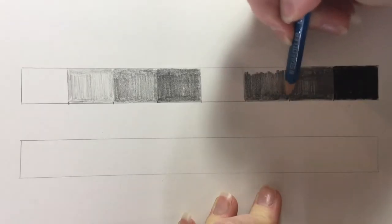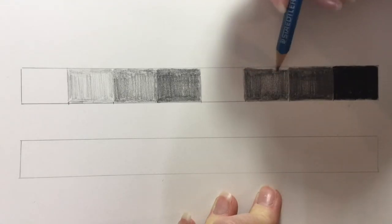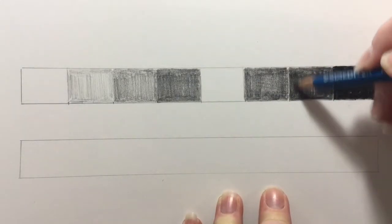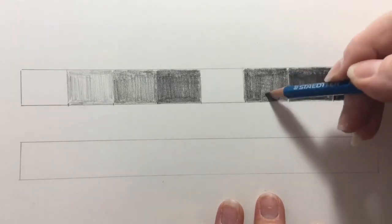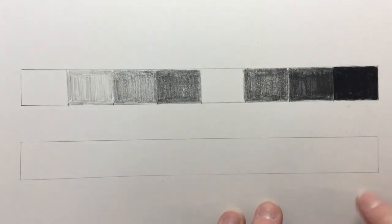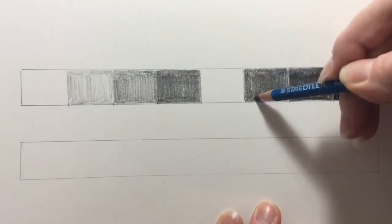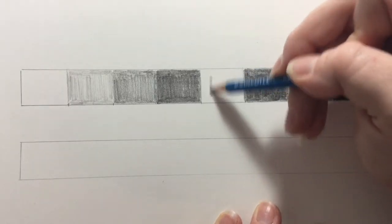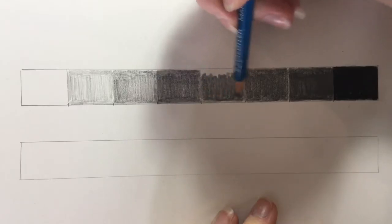So as I start to do my next box and I've left the middle one blank, I'm starting to see that I'm going to need to alter my values a little bit. As I look at the value boxes on either side of the one that I haven't colored in yet, I notice that they're a little too similar.